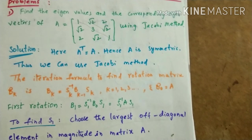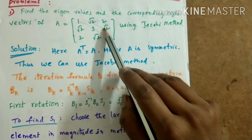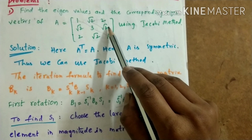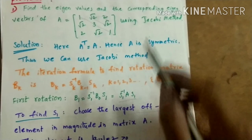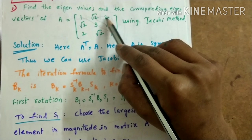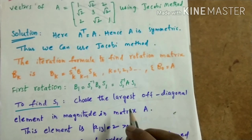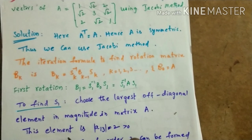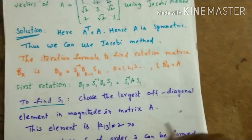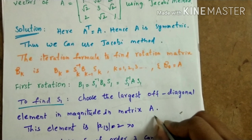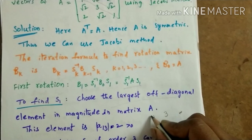In the given matrix we need to choose the largest off-diagonal element. The diagonal elements are 1, 3, 1. We consider the off-diagonal elements above the diagonal: √2, 2, √2. We must take the absolute values and find the maximum — |√2|, |2|, |√2| — so 2 is the largest. This element 2 is located in the first row, third column, position A₁₃.